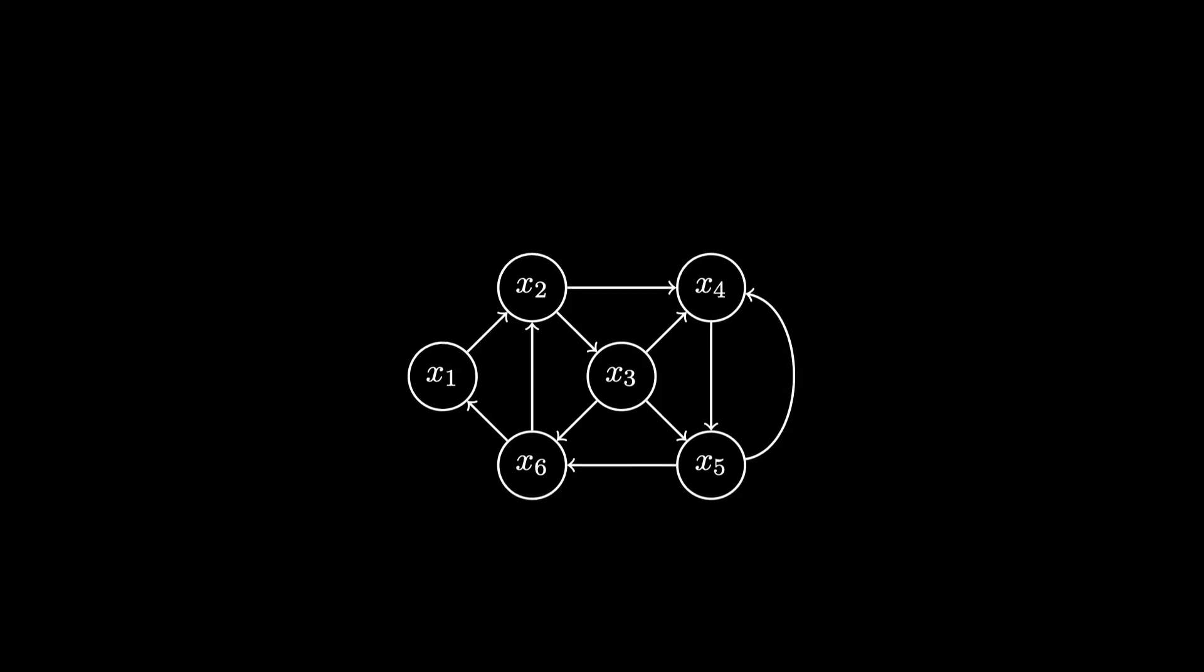Another example of a zero knowledge proof is the Hamiltonian cycle problem. Hamiltonian cycle is the problem of finding a cycle in a graph that visits each node exactly once. A possible solution is shown here. Of course, in this small example, it is easy to find such a Hamiltonian cycle, but in general, Hamiltonian cycle is a known NP-hard problem.